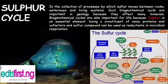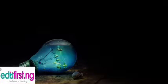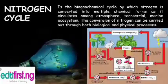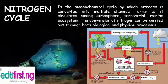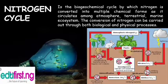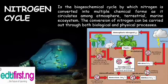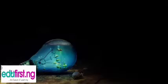Next is the nitrogen cycle. This is the biogeochemical cycle by which nitrogen is converted into multiple chemical forms as it circulates among the atmosphere, terrestrial, and marine ecosystems. The conversion of nitrogen can be carried out through biological and physical processes. Below is a diagram showing how nitrogen is converted from one form to another — from the atmospheric to the soil, into plants, through ammonification, nitrification, assimilation, and more — illustrating how nitrogen circulates in the ecosystem.